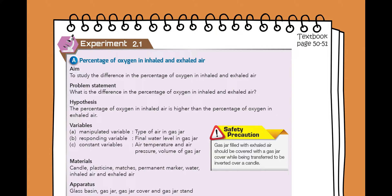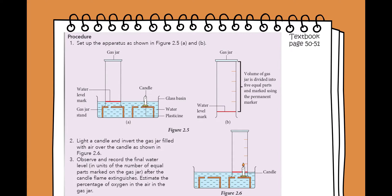The apparatus that you need in this experiment are glass basin or glass trough, gas jar, gas jar cover, and gas jar stand. We also need rubber tubes that are needed in the second part of the experiment.